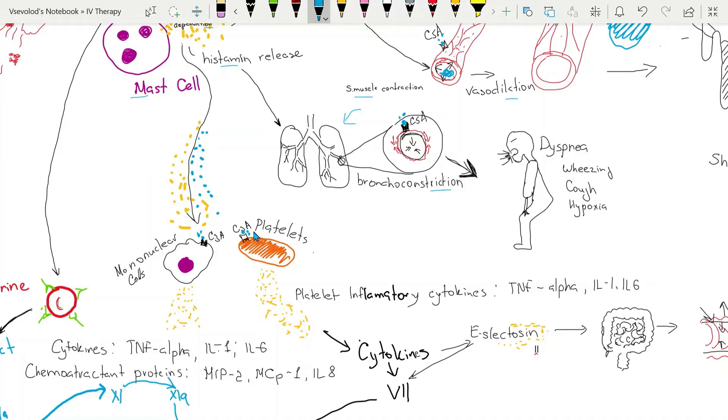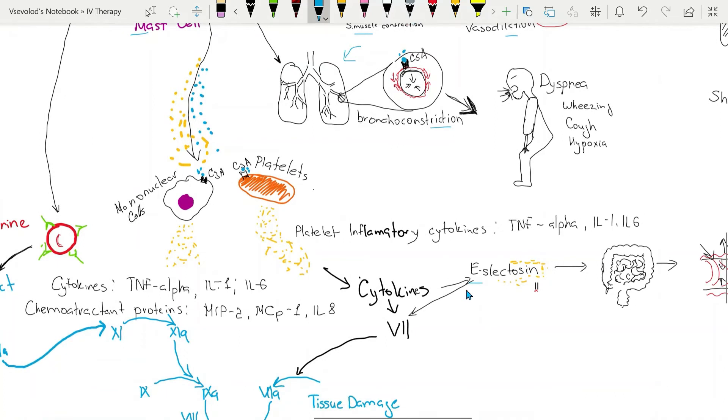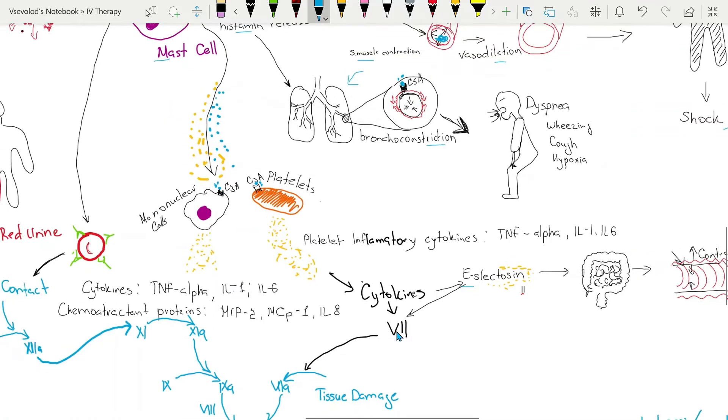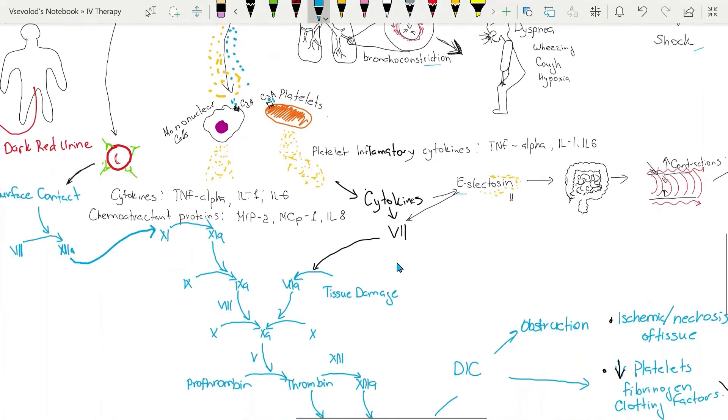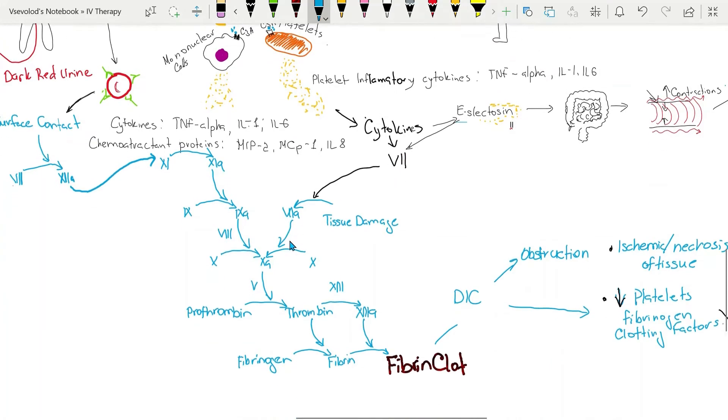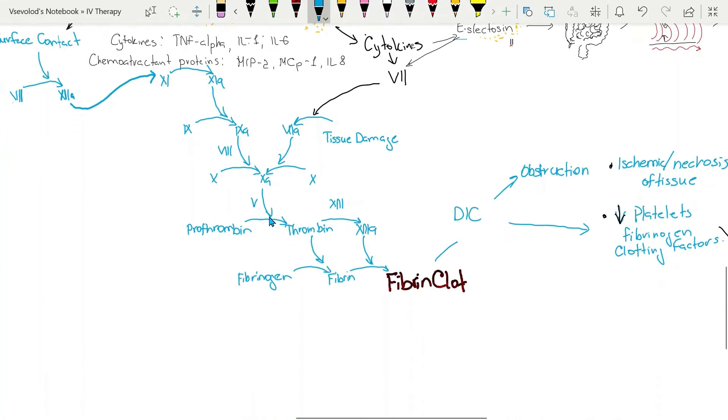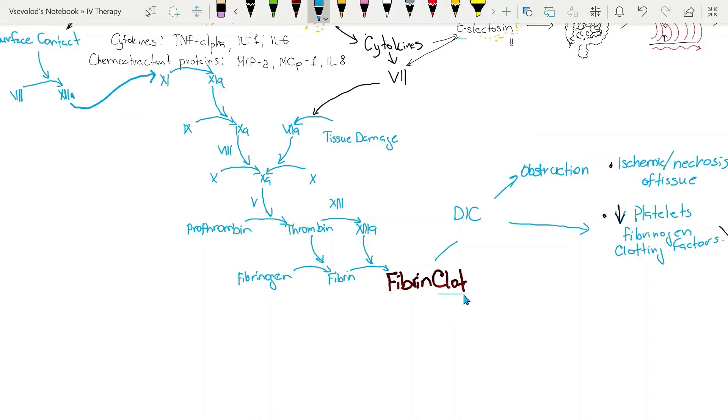Complements and cytokines, especially E-selectin, will bind to endothelial cells, triggering the coagulation cascade. Activation of the intrinsic pathway of factor 7 will activate factor 10, which will lead to activation of factor 5, prothrombin, and fibrinogen. As an end result, the fibrin clot will form.